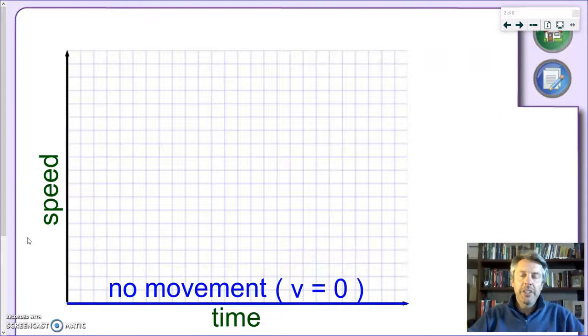Exactly as we did in the case of distance time graphs, we're going to see how we can represent some simple cases, starting with the easiest one, the case when you have an object which is not moving, so it's speed equal to zero.